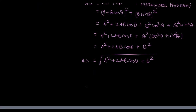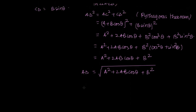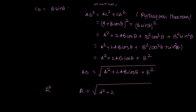Expanding: AD² = A² + 2AB cosθ + B² cos²θ + B² sin²θ = A² + 2AB cosθ + B²(cos²θ + sin²θ). Since cos²θ + sin²θ = 1, we get AD² = A² + 2AB cosθ + B². Therefore, AD — which is R — gives us R = √(A² + 2AB cosθ + B²).